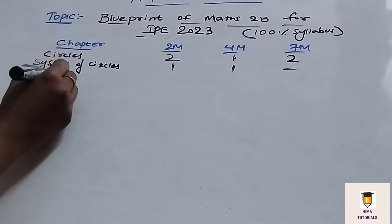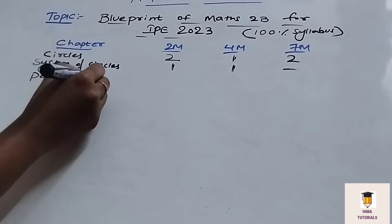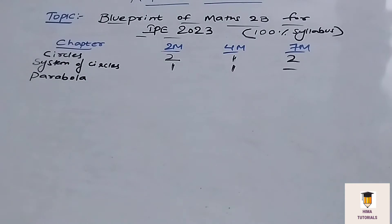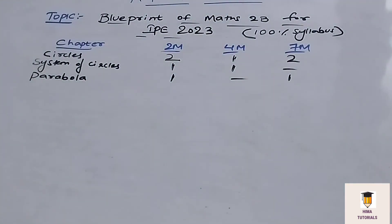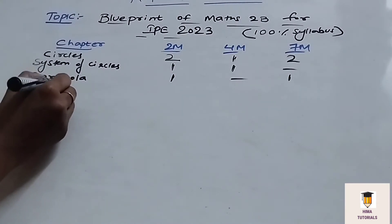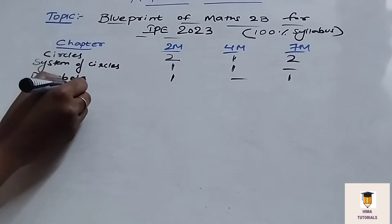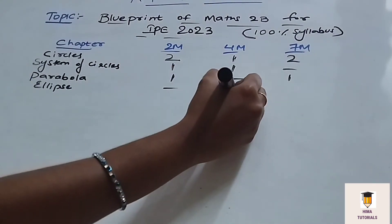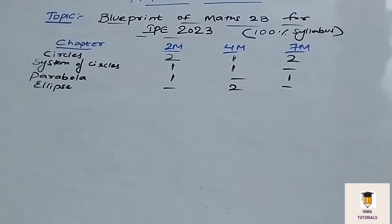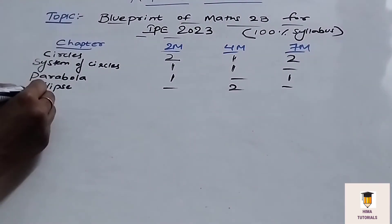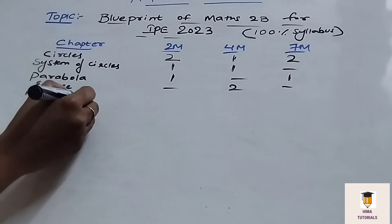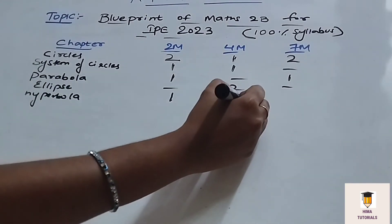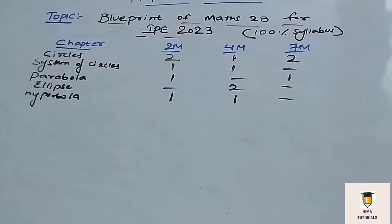Coming to the next chapter, Parabola. In this chapter, we will get 2 four-mark questions. And coming to Hyperbola, we will get 1 two-mark and 1 four-mark question.